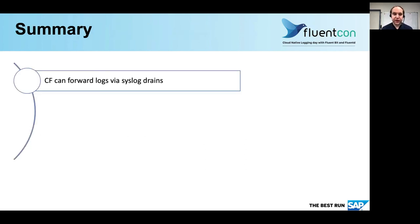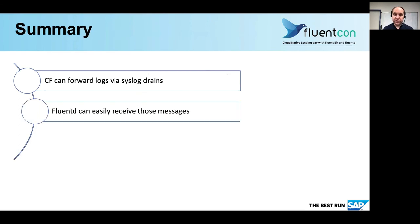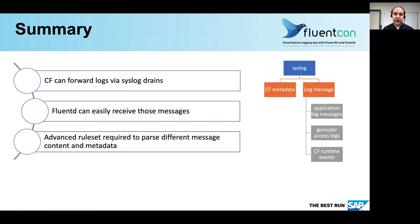Summarizing all of this: Cloud Foundry can forward logs of applications via syslog drains. Fluentd can easily receive those messages as a syslog drain. And if you want to parse the incoming messages, you will require an advanced toolset to first parse the syslog part, then take care of the metadata and the log messages, and the three kinds of message formats you will get. I hope this presentation was interesting to you. Thank you for your attention.